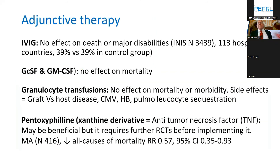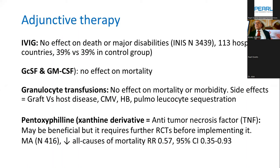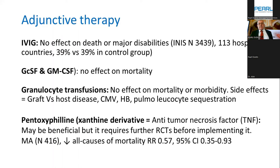In summary, there is currently no place for adjunctive therapy. IVIG: the INIS trial of approximately 3,500 patients with clinical or confirmed sepsis showed mortality and morbidity in treatment vs. control groups was precisely 39% versus 39% — no place for immunoglobulin for prevention or treatment of sepsis. G-CSF has no effect on mortality. Granulocyte transfusion doesn't improve outcomes and brings many adverse effects including CMV, hepatitis B, and graft-versus-host disease. Anti-TNF-alpha showed some improvement of mortality with relative risk 0.57 in one large study, but further studies are needed.